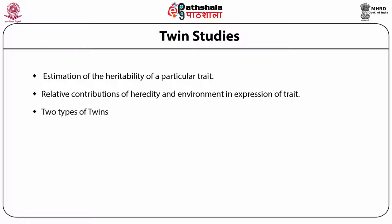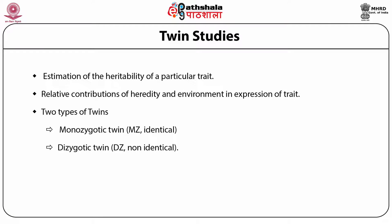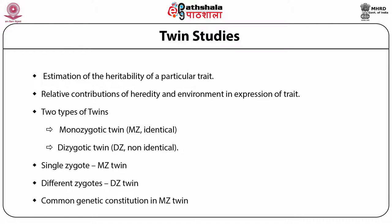Twins can be monozygotic (identical) twins or dizygotic (non-identical) twins. Monozygotic twins result from the fusion of one sperm and one egg resulting in a single zygote which further divides into two at the embryo stage. Dizygotic twins result from two different zygotes, each formed by the fusion of sperm and egg separately. Monozygotic twins are of the same sex, while dizygotic twins may be of the same or different sex. Since monozygotic twins develop from a single zygote, they are regarded as having a common genetic constituent, whereas dizygotic twins have different genetic constituents like siblings.